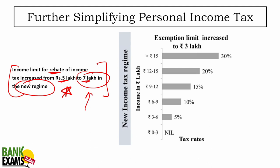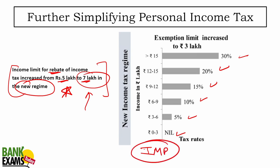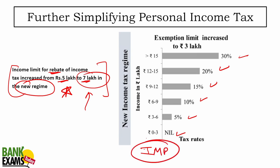Tax slabs under the new tax regime: 0 to 3 lakhs — nil; 3 to 6 lakhs — 5%; 6 to 9 lakhs — 10%; 9 to 12 lakhs — 15%; 12 to 15 lakhs — 20%; above 15 lakhs — 30%. These tax rates are important — please remember them.